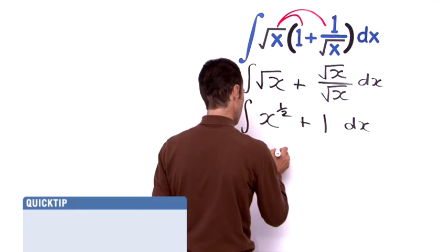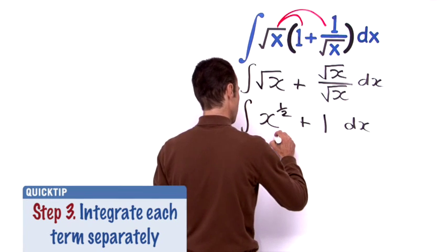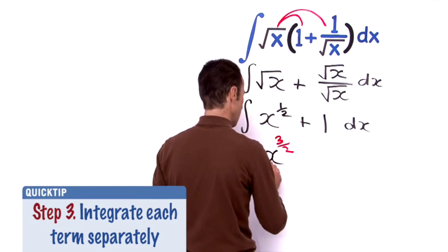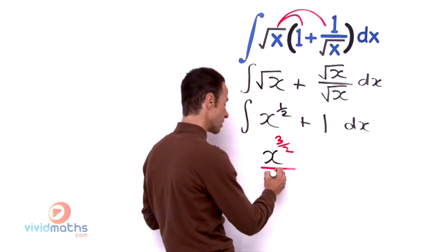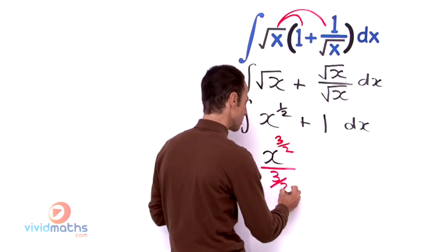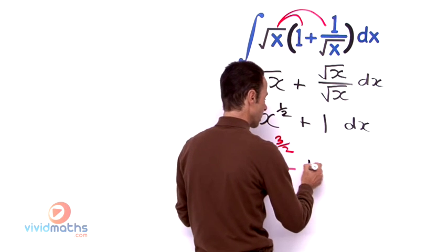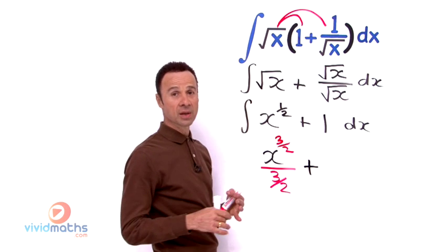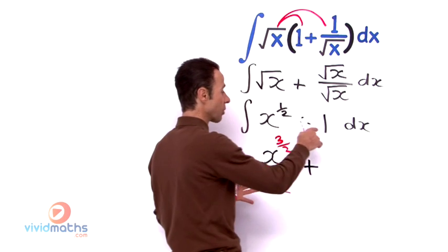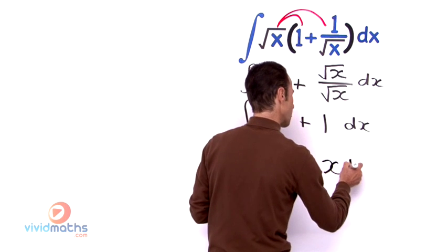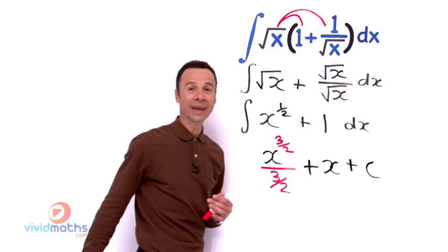That is going to end up becoming x to the power of 3 on 2 and then we divide by that also so it is divided by 3 on 2. And then the integral of a constant simply you just add the x to it so that one transforms into an x.